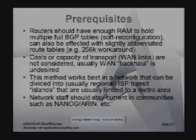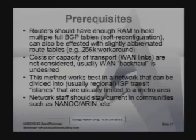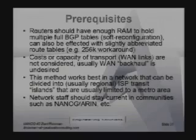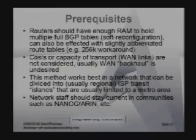Let's talk about the preparation steps and prerequisites. To make your life easier, your routers should have enough RAM to hold multiple full BGP tables. Some vendors call this software configuration. You want to be able to hold the entire routing information base you hear from your ISP in RAM before subjecting it to any of your policies, so you can more quickly make changes. This will also work if you have abbreviated tables — it'll work very well on 200,000 routes as well as 267,000, which was as of last week.